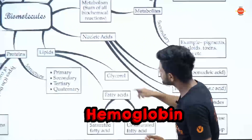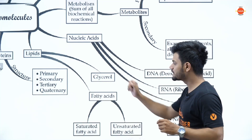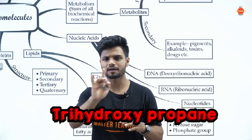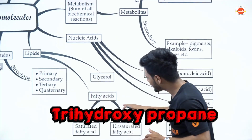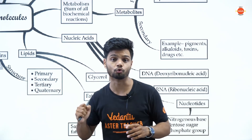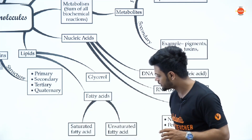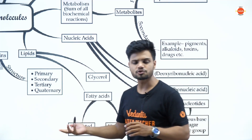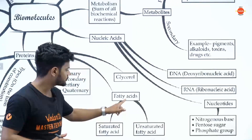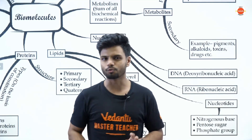Then we have lipids, which are mainly divided into two types: glycerols and fatty acids. Glycerols are basically a type of alcohol, also called trihydroxypropane. Fatty acids are carboxylic acids with a functional group. Examples include saturated fatty acids, which have single bonds, and unsaturated fatty acids, which have double or triple bonds. MUFA and PUFA are important terms to know here.